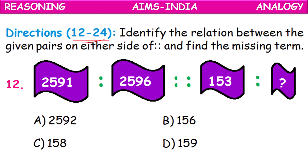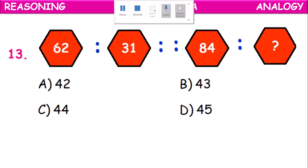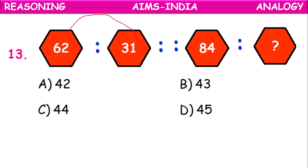Directions 12 to 24 — finding the relationship between numbers. The sequence 2, 5, 9, 1, 2, 5, 9, 6 has 5 added each time. So for 153, the next number is 153 plus 5 equals 158 — correct answer 158. Next: 62 became 31 because 62 divided by 2 equals 31. So 84 divided by 2 equals 42 — option A is correct. Next: 1 a.m. became 1:25 a.m. — a 25-minute gap. So 2 p.m. will become 2:25 p.m.